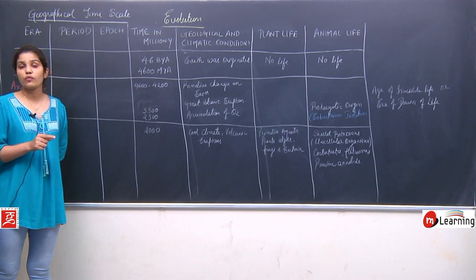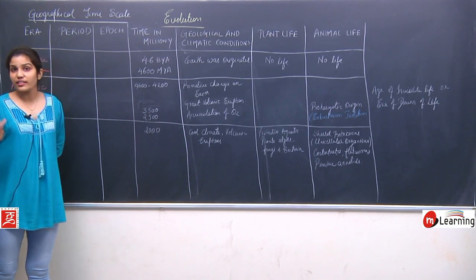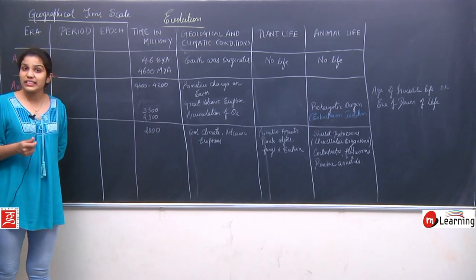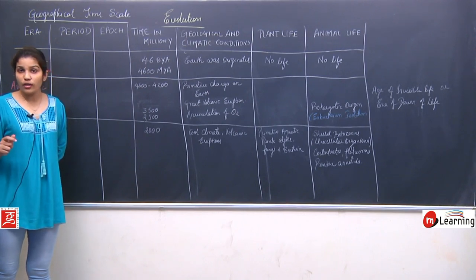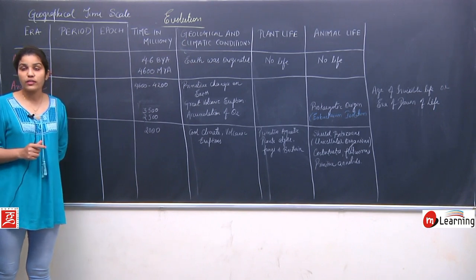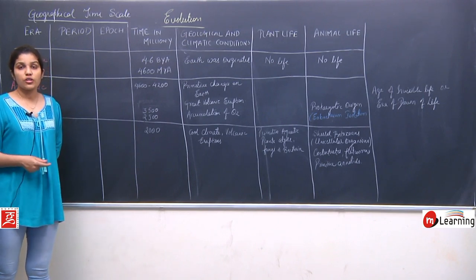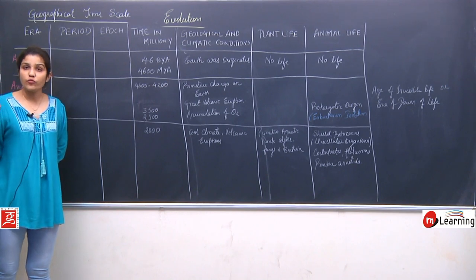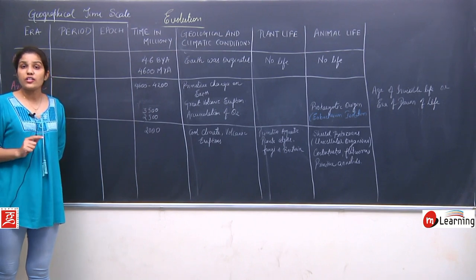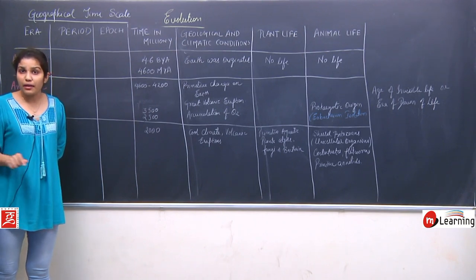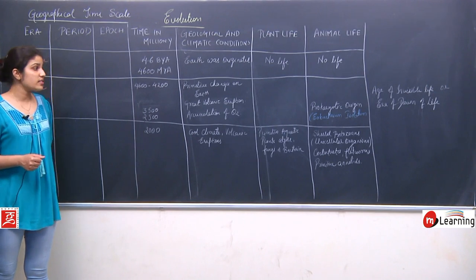Due to the release of oxygen, aerobic respiration started on earth. The ozone layer formed around the earth, reflecting harmful UV rays, making conditions on earth more favorable for the origin of life around 2500 million years ago.